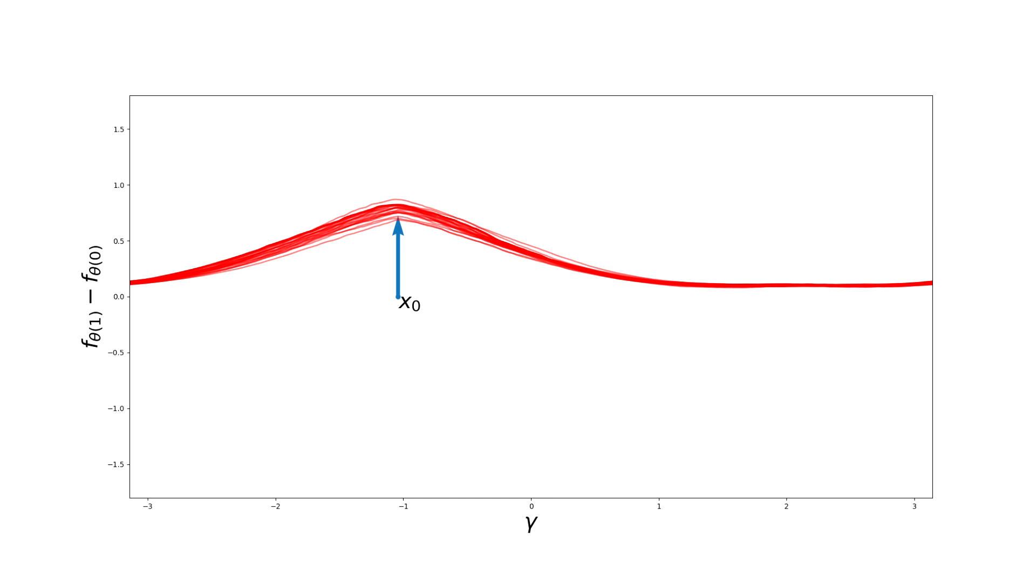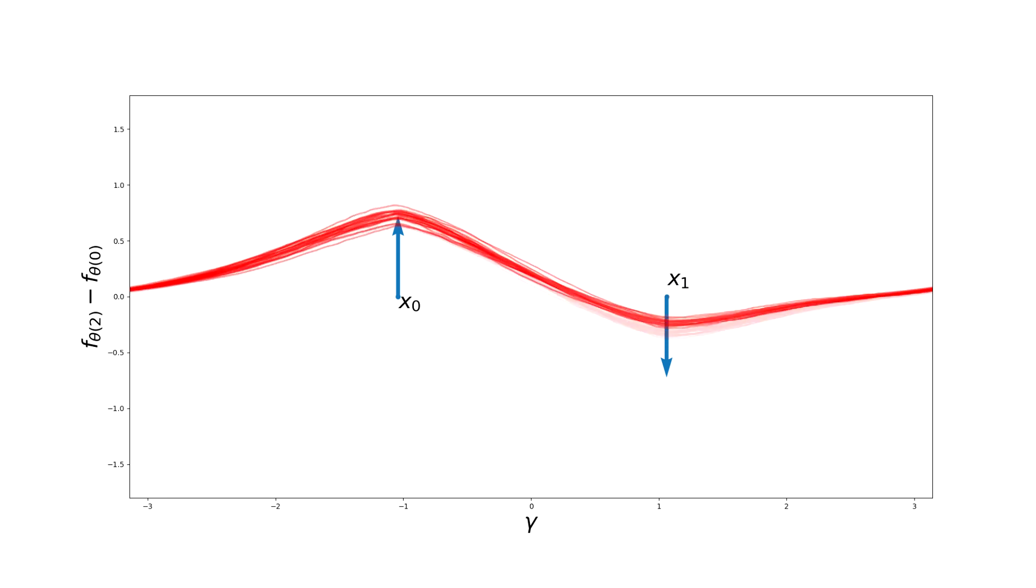Furthermore, this behavior is linear. If we add another data point, the two spikes simply add up.